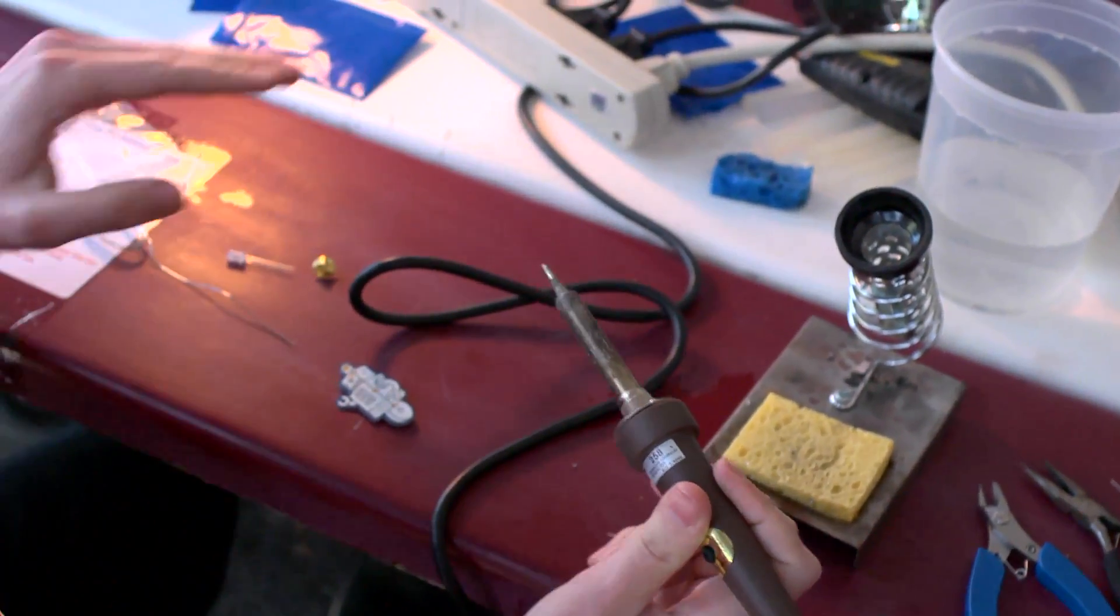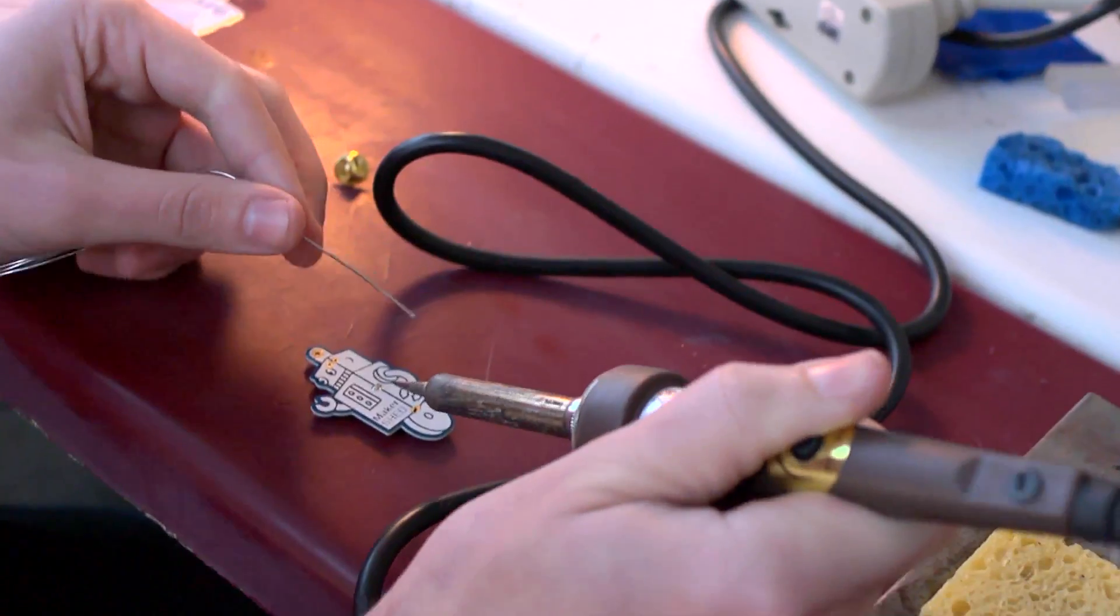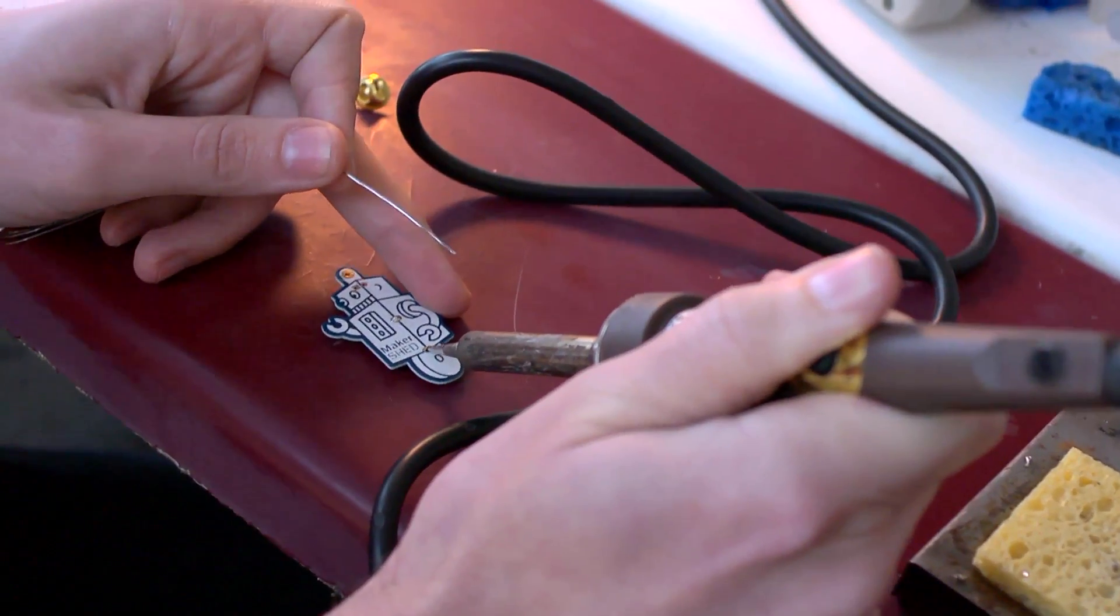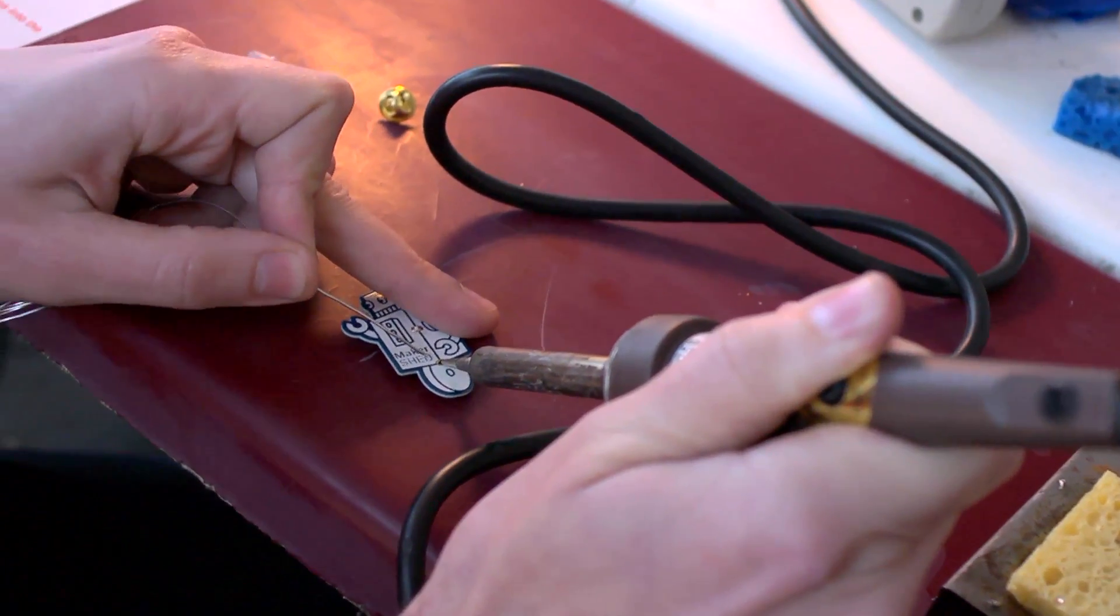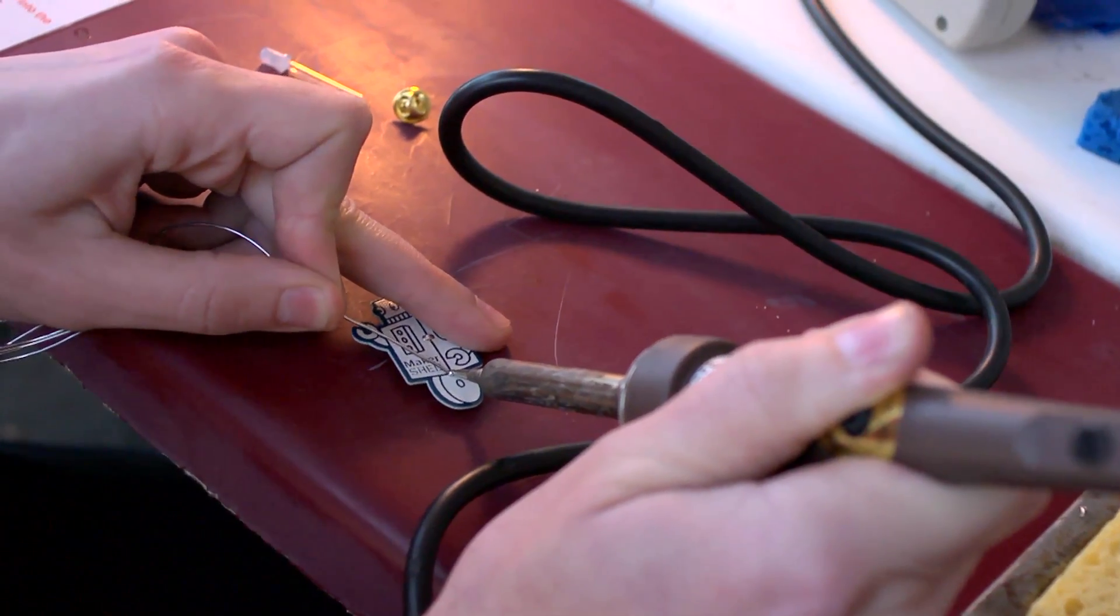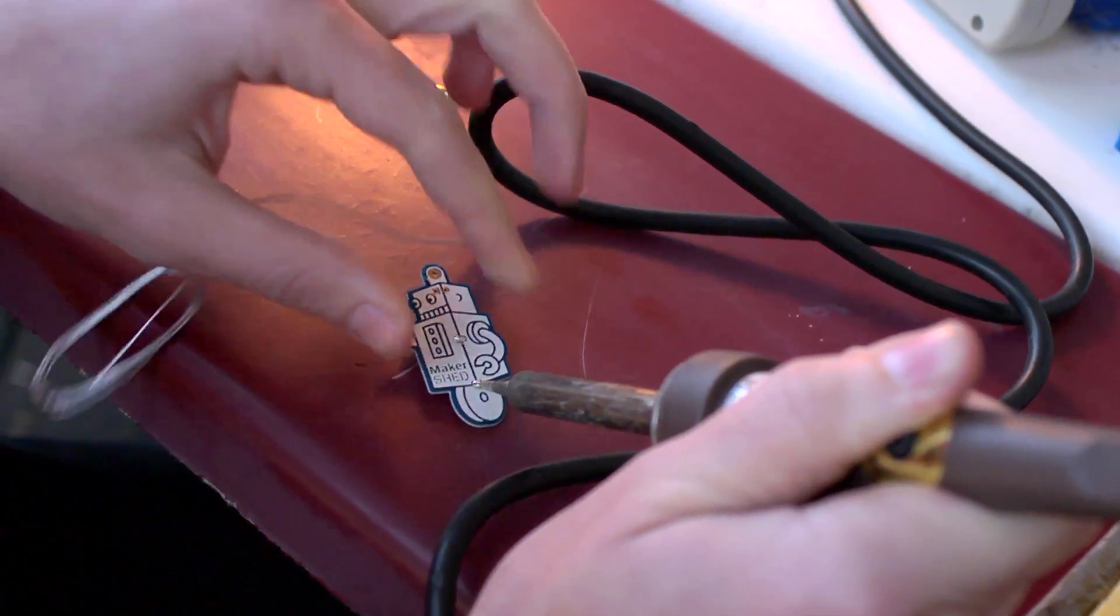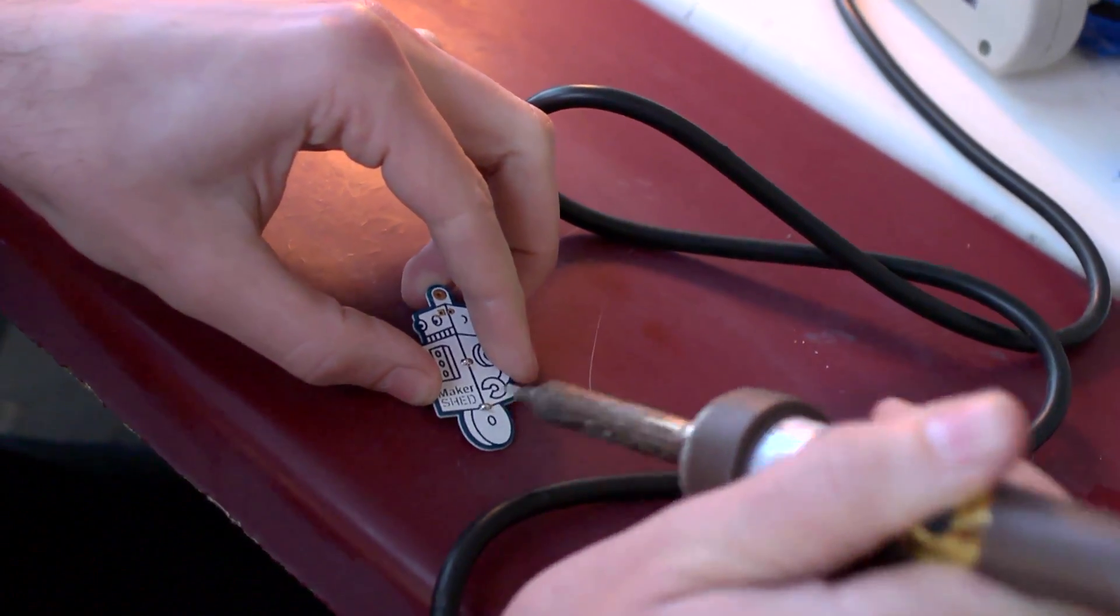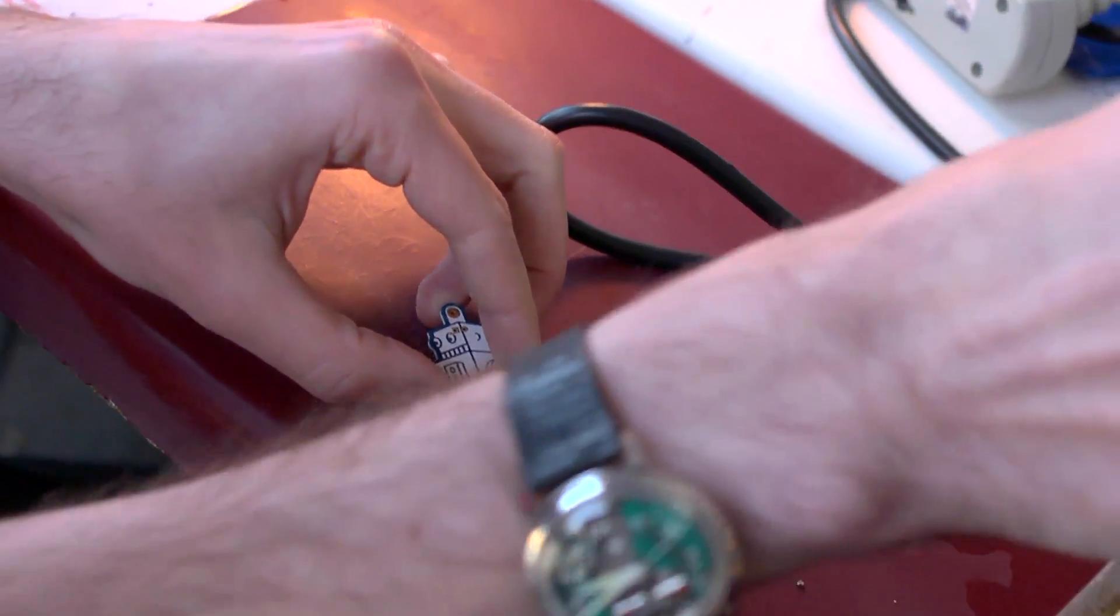So now I'm going to heat both the pad and the lead at the same time. And now I bring in the solder and it just starts melting there. If it's nice and hot, it flows right around. I hold it for an extra second to make sure that it sets in place. And then I lift up and that's done.